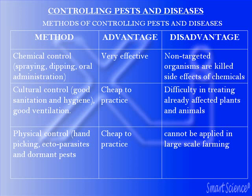The third method is physical control — hand picking — which is typical for ectoparasites and slow-moving pests. An example is picking ticks off farm animals. The advantage is that it is cheap to practice since it doesn't involve money. The disadvantage is that it cannot be applied on a large scale — for instance, you cannot go around hand-picking ticks from an entire flock of poultry or herd of cattle.